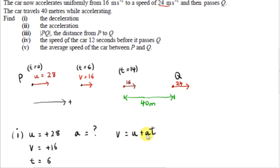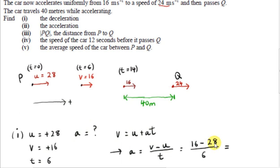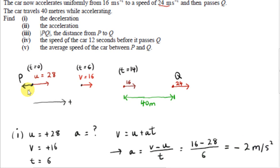For uniform acceleration, V equals U plus AT. We rearrange this to get A: subtract U from both sides and divide both sides by T. We get 16 minus 28, which is minus 12, divided by plus 6, which is minus 2. So the acceleration vector comes out to be negative. The units are meters per second squared. The acceleration vector would be pointing to the left, with a magnitude of 2.